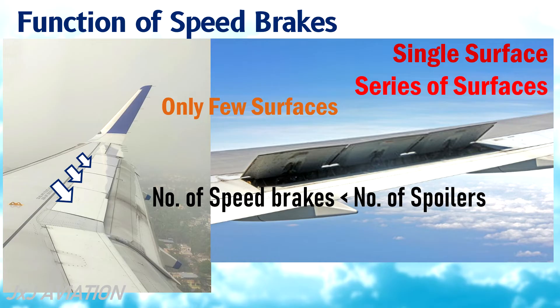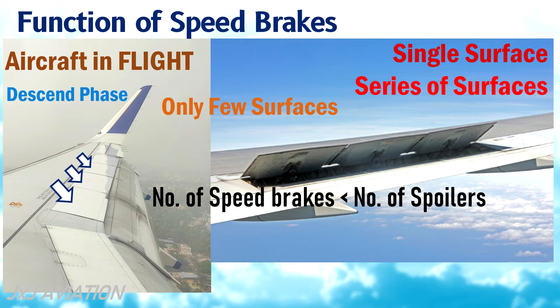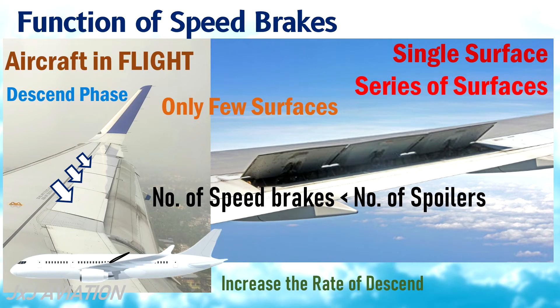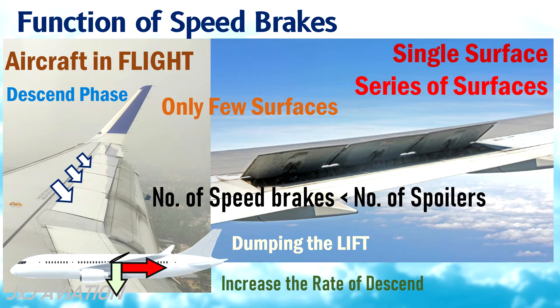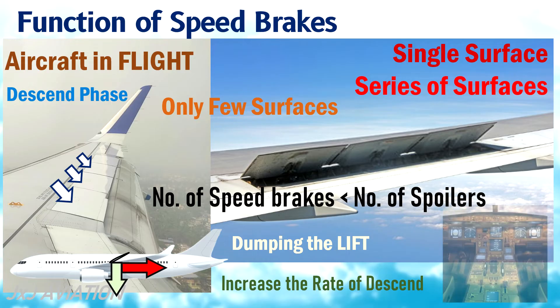The speed brakes are surfaces which extend only when the aircraft is in flight. They are useful during the descent phase to increase the rate of descent of the aircraft by dumping the lift. When extended, the drag acting on the aircraft increases, which reduces the speed and the lift acting on the aircraft. The speed brakes are extended using a speed brake lever.